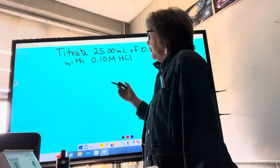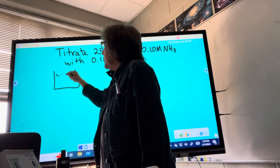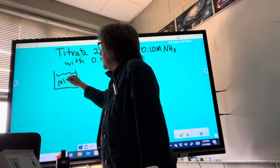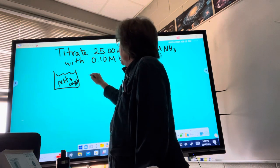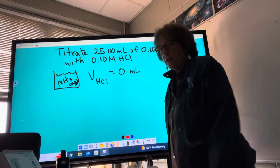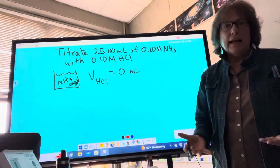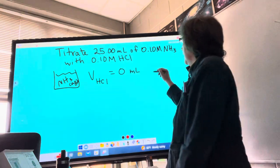The first point we talked about was when no titrant was added and all we had in the beaker was the ammonia. This is when volume of HCl added is zero milliliters. We haven't added any acid yet. All I've got is that. Everything we did on that is fine.